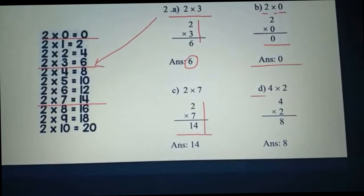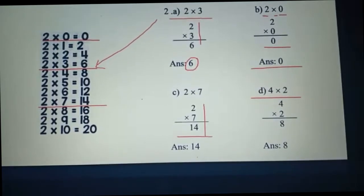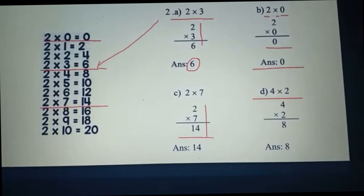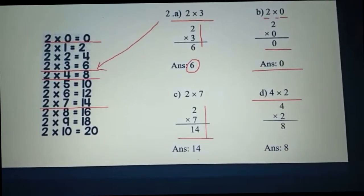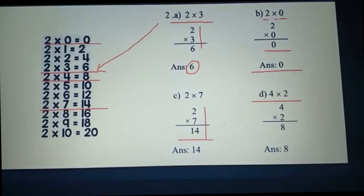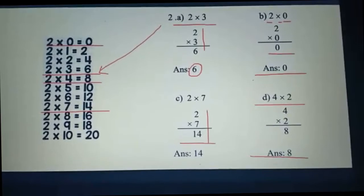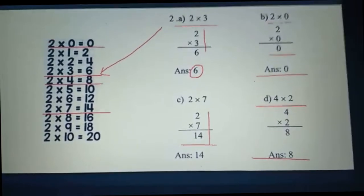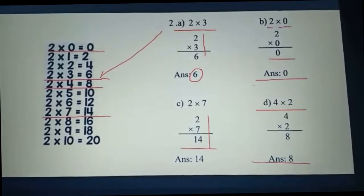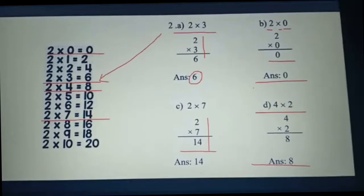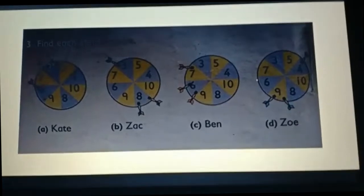Number D: four multiply by two. Two fours are eight, so the answer will be eight. You need to know the times table of 2 very clearly and carefully. Now number 3.